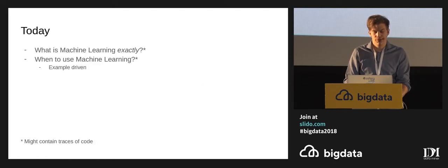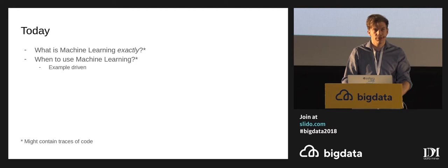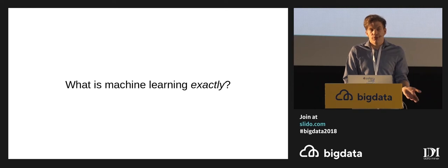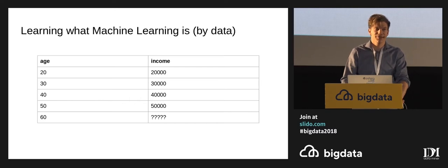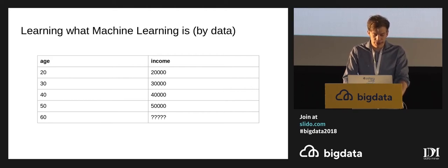Now I want to talk about what machine learning exactly is — for some of you that might not be entirely clear — and also when to use it. Some of you may have cloned code and run examples, but that doesn't give you a good feeling of what it actually is. So, without formulas, just with a couple of examples: using some data, can anyone tell me what you would expect the answer to be for income? Yes, it's very quick for people to see that it's most likely going to be 60,000 — that's a good estimation.